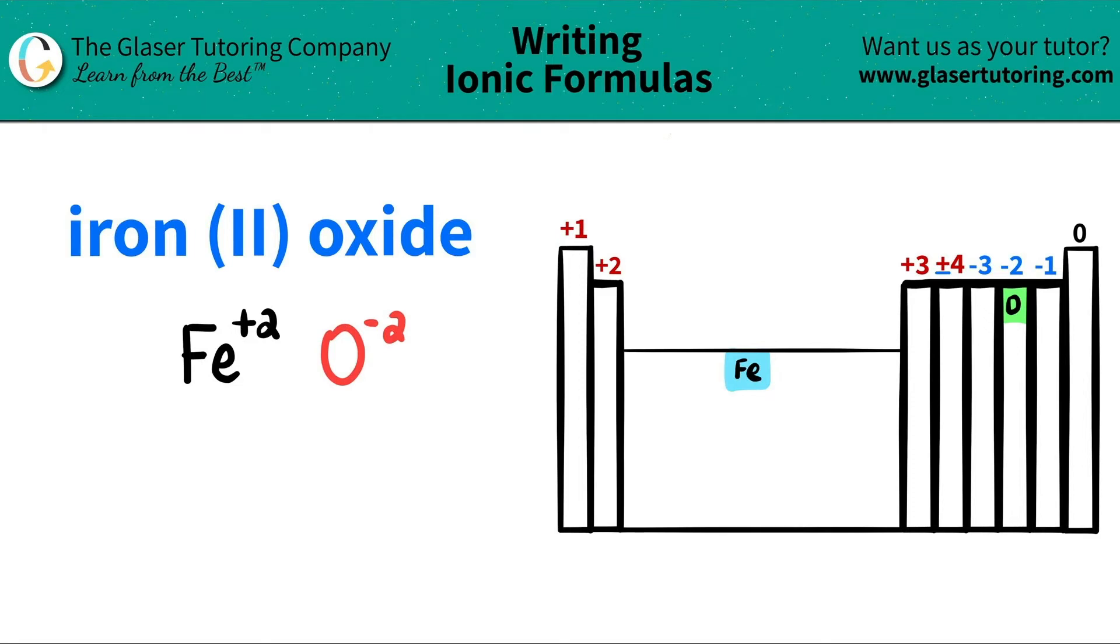Now, since I have both components, we do this little trick where we take these charges and we crisscross them to just say how many of each I need. So this +2 crisscrosses down, telling me that I need 2 oxygens. And this -2 crisscrosses down, telling me that I need 2 irons.